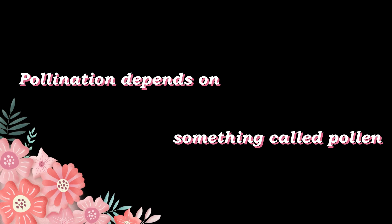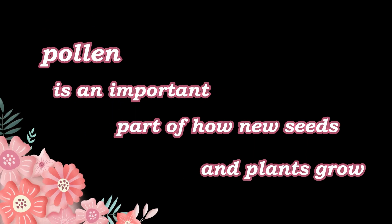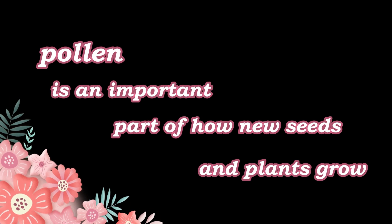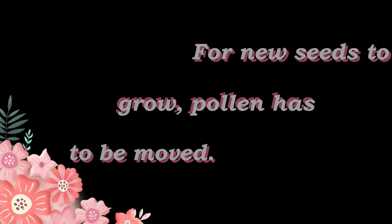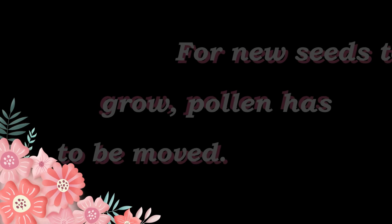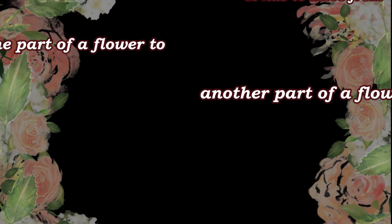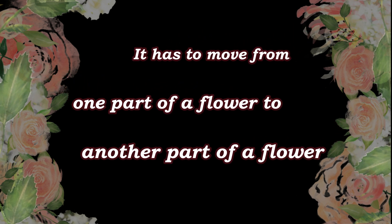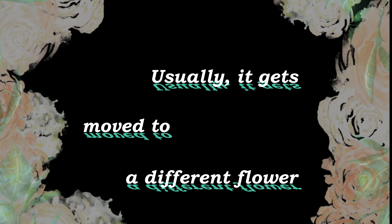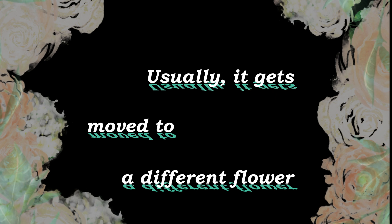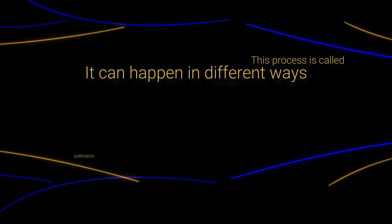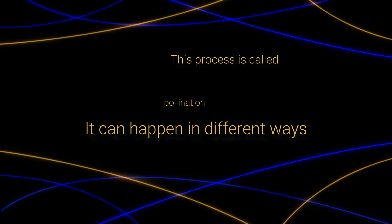Pollination depends on something called pollen. Pollen is an important part of how new seeds and plants grow. For new seeds to grow, pollen has to be moved — it has to move from one part of a flower to another part of a flower, usually to a different flower. This process is called pollination.